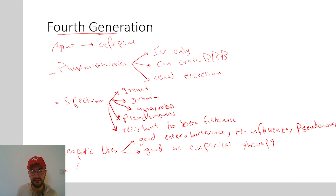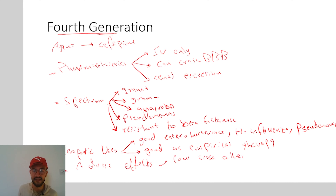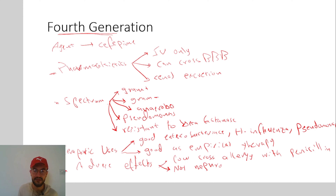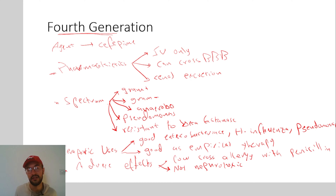Regarding the adverse effects of the fourth generation cephalosporins, they have low cross-allergy with penicillin, same as the third generation, because their structure is complex. They are also not nephrotoxic — nephrotoxicity is limited to the first generation cephalosporins only; the other generations are not nephrotoxic.